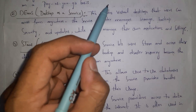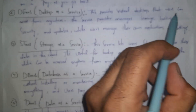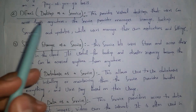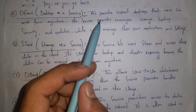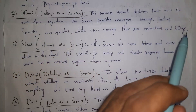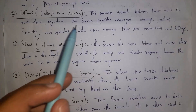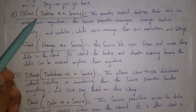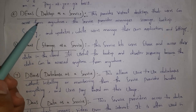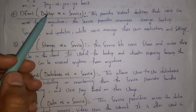The next service provided by cloud is Desktop as a Service, shortly called DaaS. Desktop as a Service provides virtual desktops that users can access from anywhere. The service providers manage storage, backup, security, and updates, while users manage their own applications and settings.